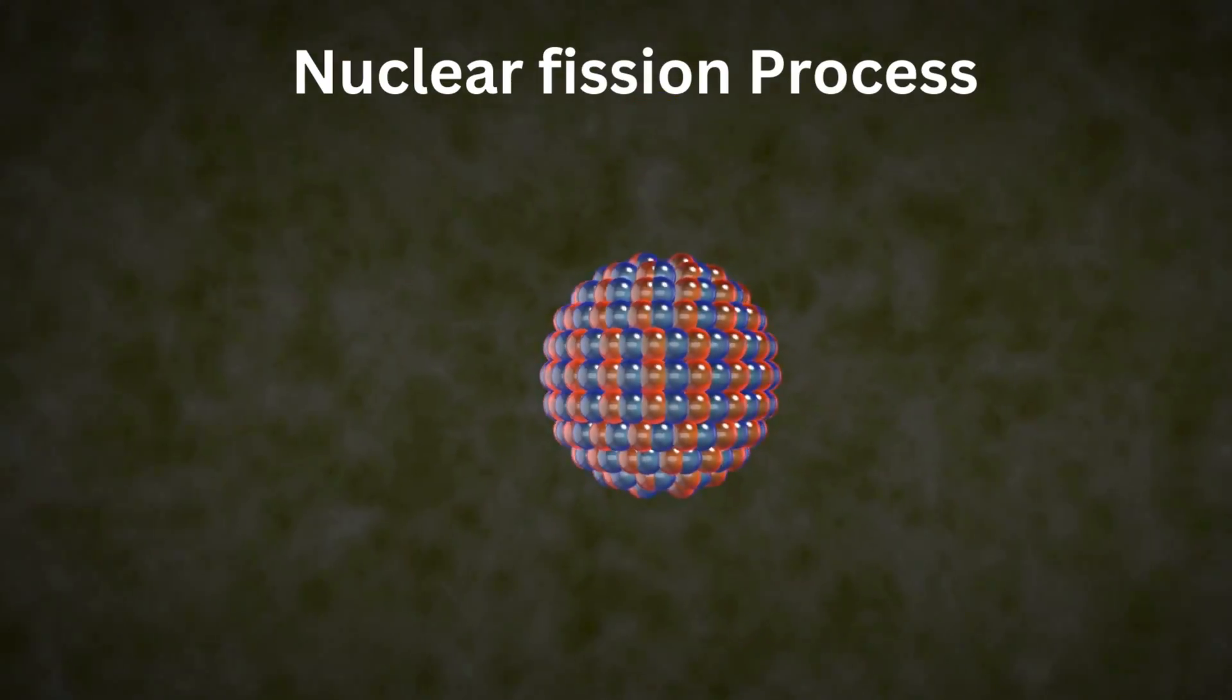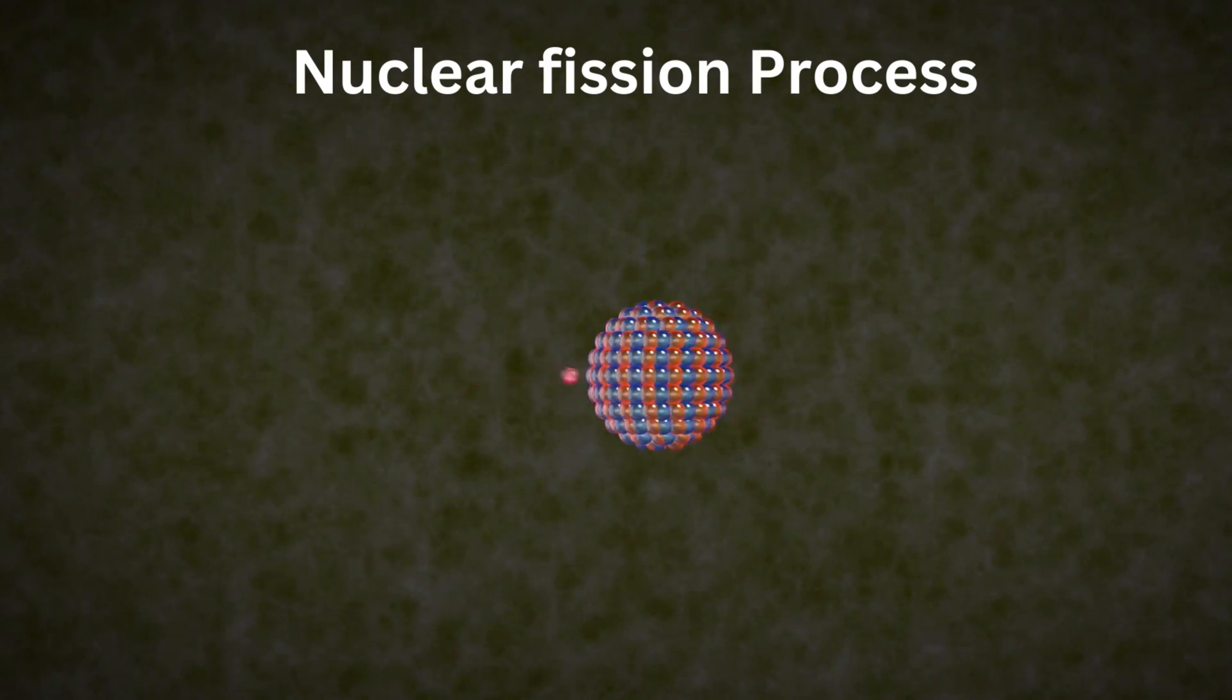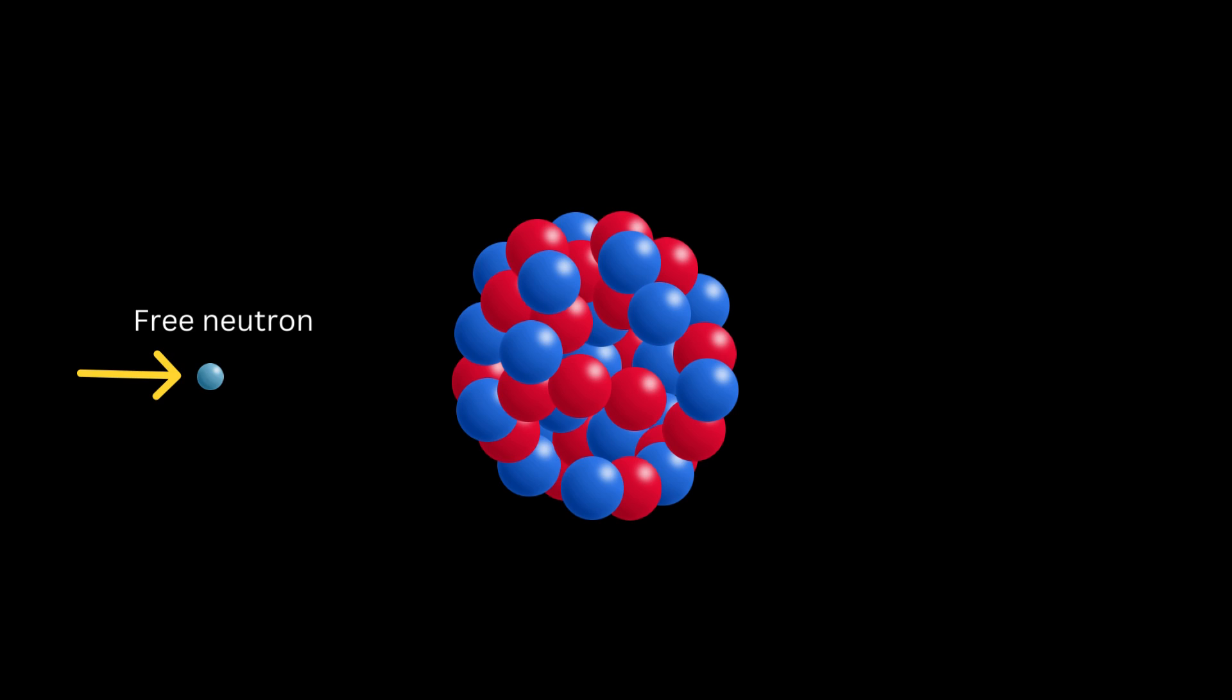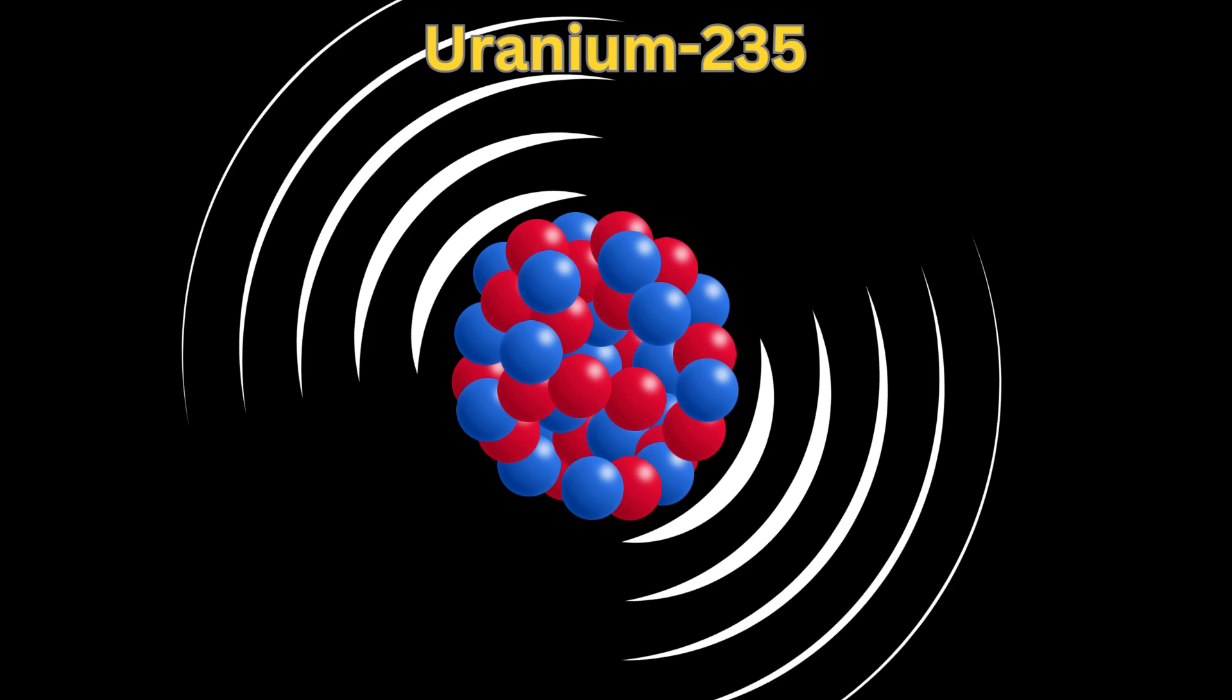The nuclear fission process can be broken down into these detailed steps. Step 1: Neutron absorption. A free neutron collides with the nucleus of a heavy atom such as uranium-235 or plutonium-239, which results in neutron absorption, thus creating a compound nucleus that is incredibly unstable.